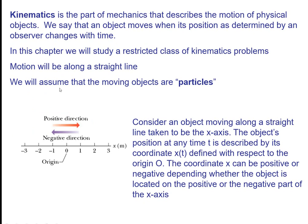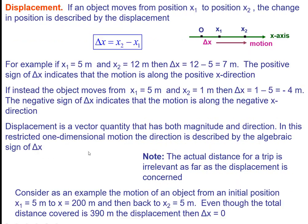There are two restrictions: motion will be along a straight line — either horizontal or vertical — and the size of the object should be considered as a point size. For measuring distance we take a reference point, which is the origin. If any object moves right of the reference point, it is positive; left is negative; upward is positive and downward is negative.